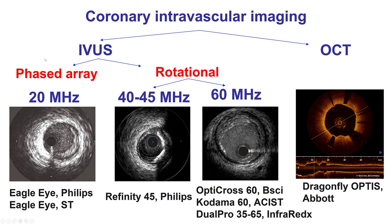This is the classification of the imaging modalities — OCT and IVUS — with the two categories of IVUS. There is also high-resolution IVUS that provides 60 MHz imaging.